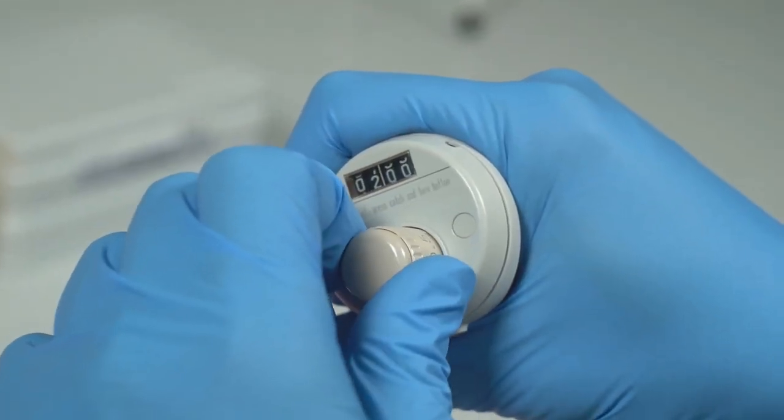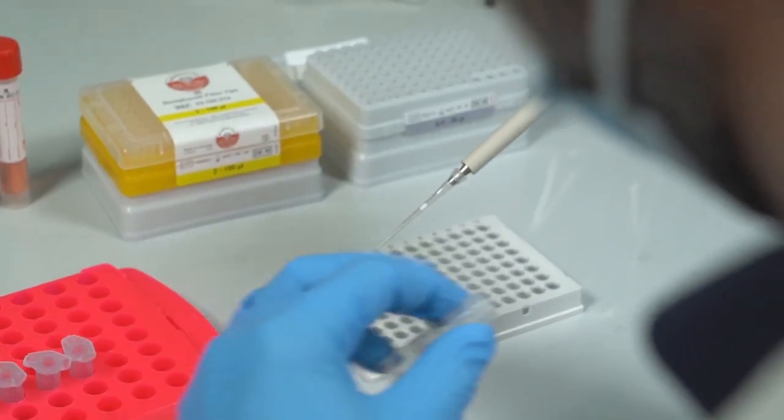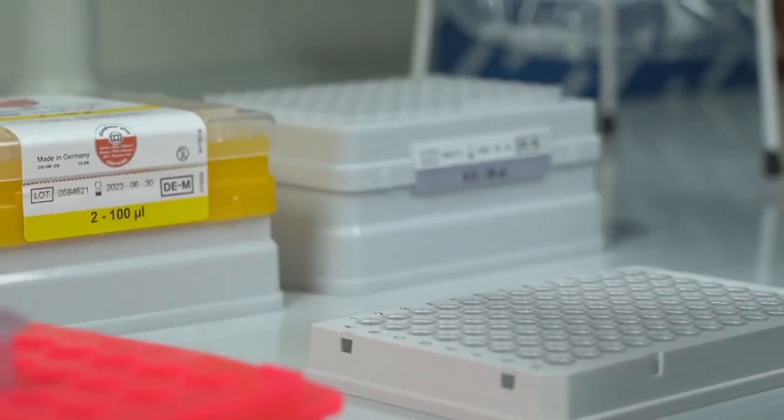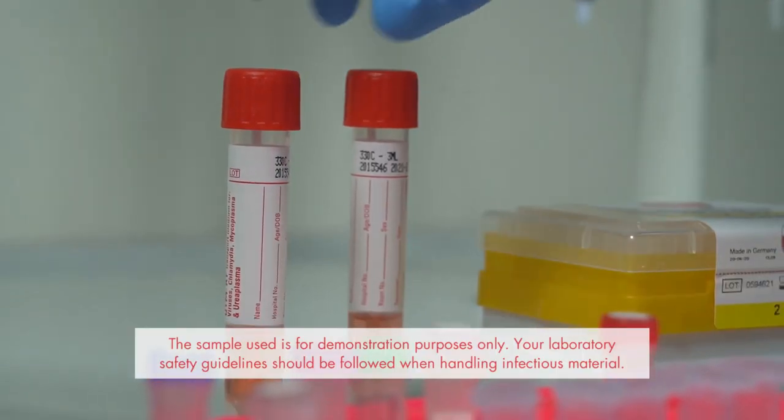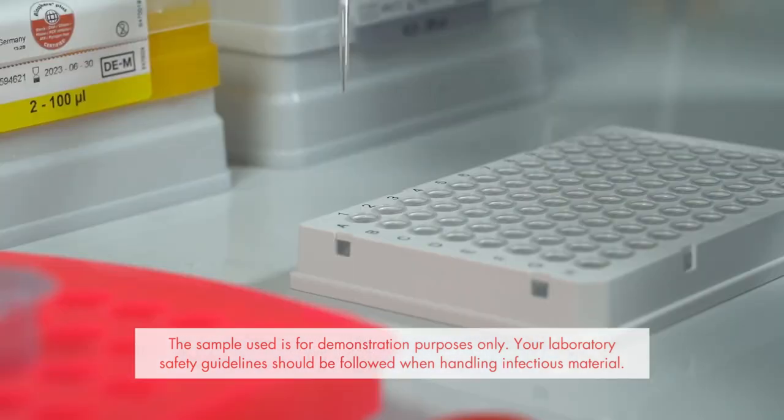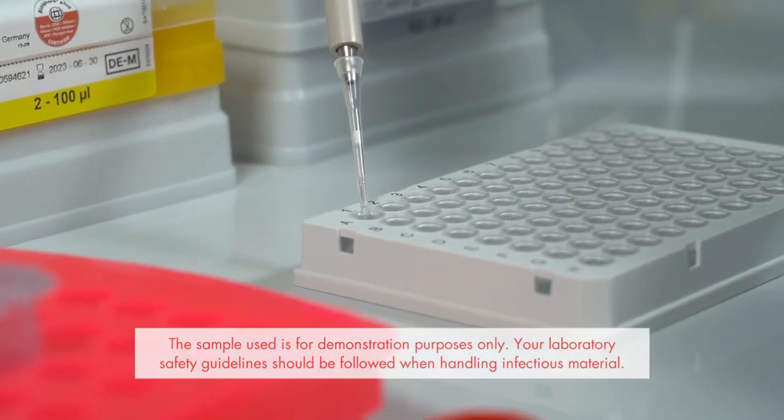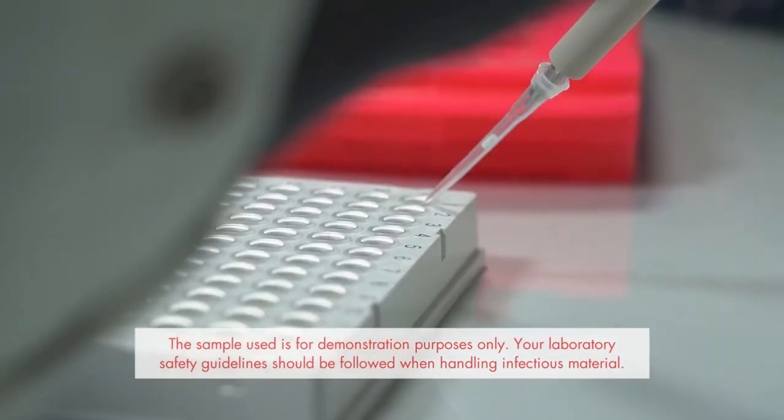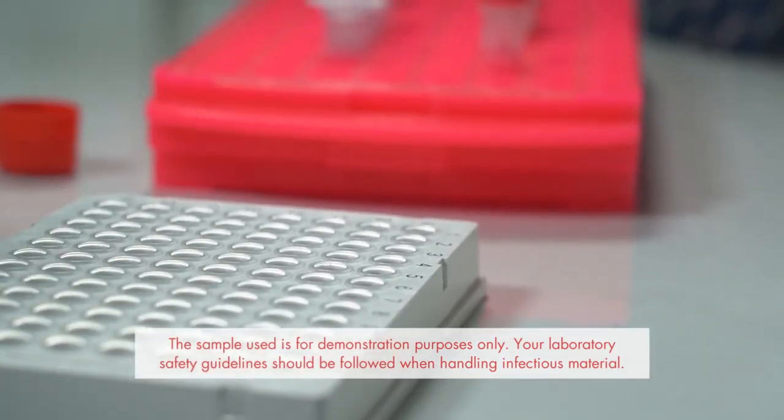Dispense two microliters of viral RNA prep buffer into each PCR tube or well of a PCR plate. Add eight microliters of the sample such as nasal, nasopharyngeal or oropharyngeal swabs stored in transport media such as UTM, VTM, PBS or physiological saline to the same PCR tube or well containing the viral RNA prep buffer.